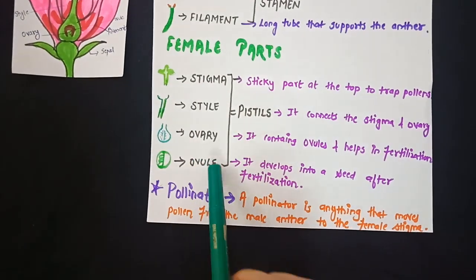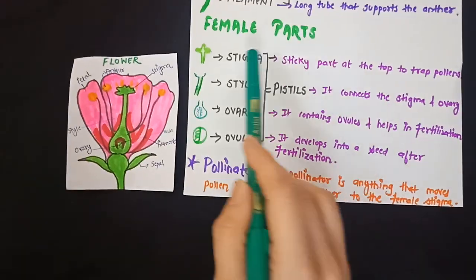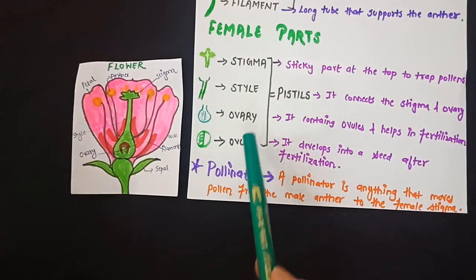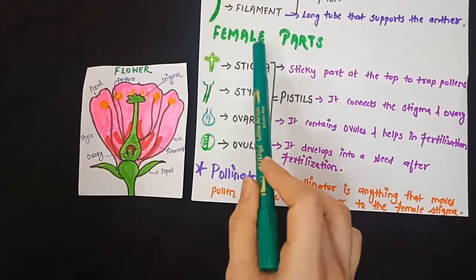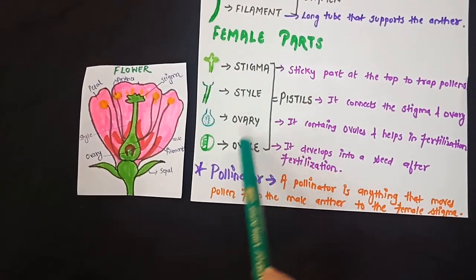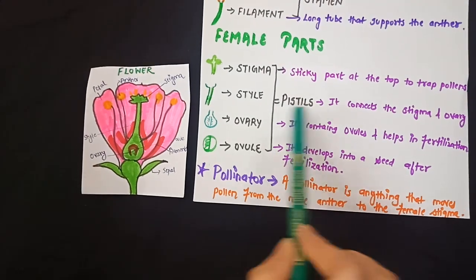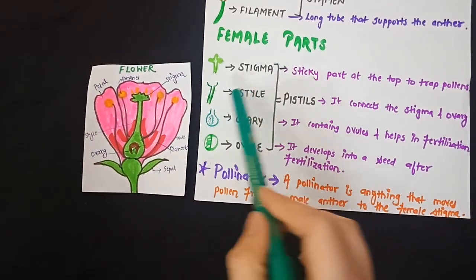Now let's move on to the female parts. We have four female parts: stigma, style, ovary, and ovule. Combined together, they are known as the pistil. I'll tell you one by one what they all are.